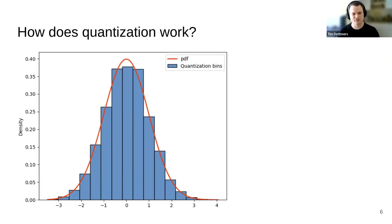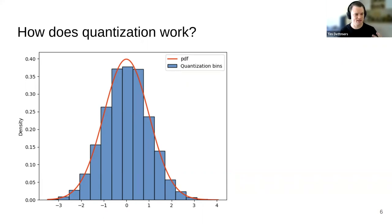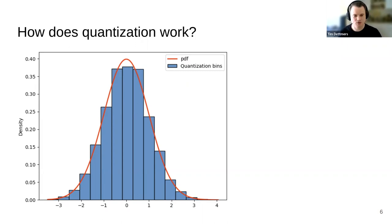If you see the bars basically overlapping or sticking out of the normal distribution, that's a representation of how much error is in this bin. So there are different ways to reduce error based on how you choose your bins.